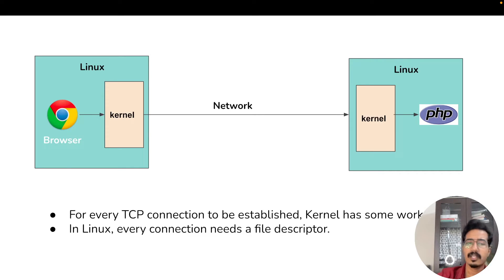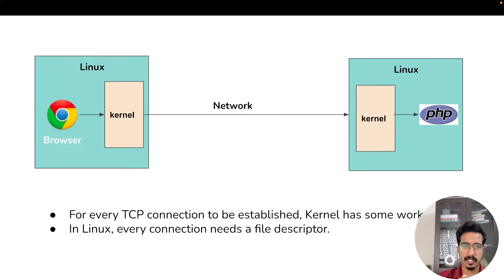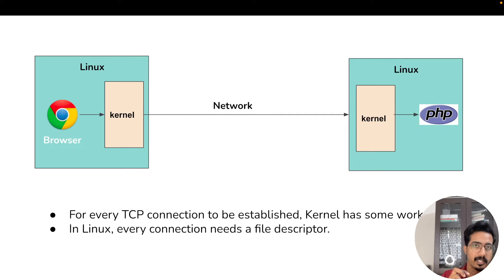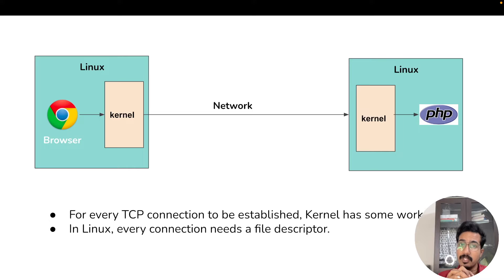In Linux, everything is a file, so each TCP socket is a file descriptor. When you open a new TCP socket, Linux opens a file descriptor for that connection. This means you're limited by the maximum number of open files the operating system can handle. In Linux, by default, this limit — called the nofile limit — is set to around 1024. That is the first practical limit you need to overcome.